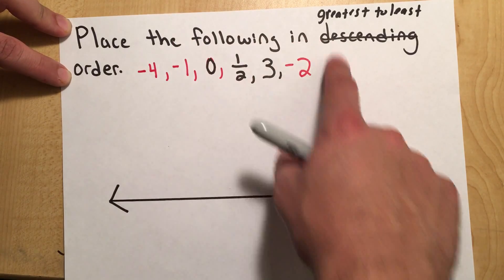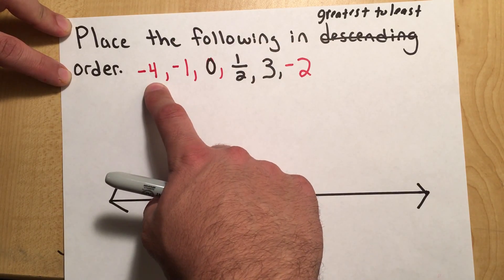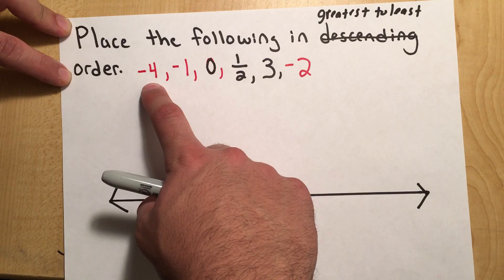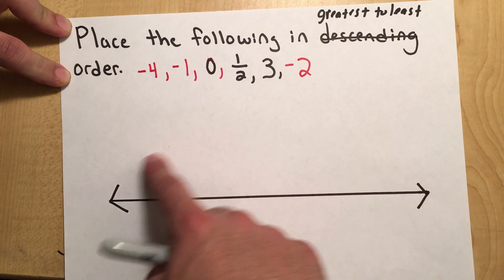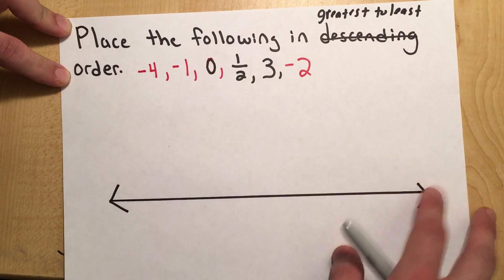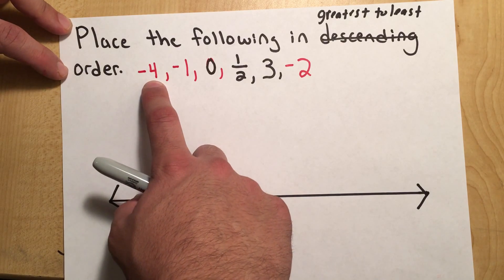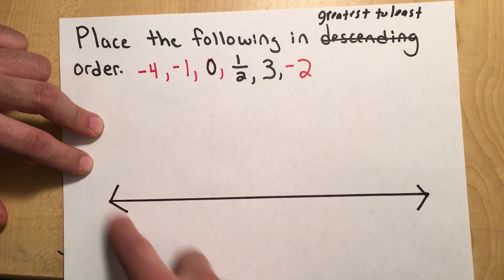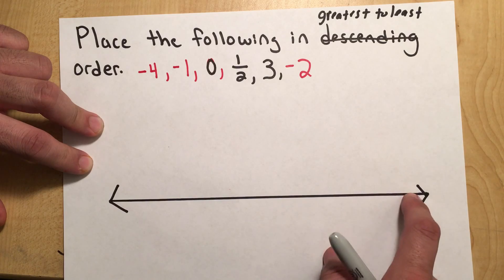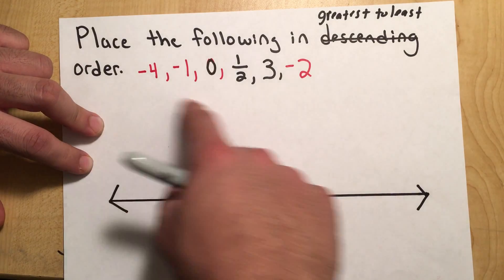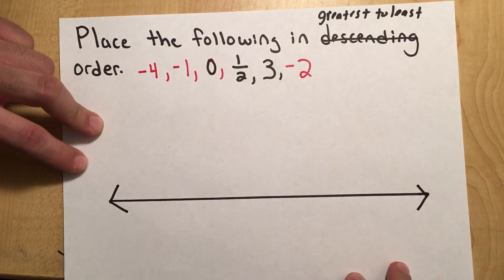So I'm just going to take our biggest number, which is 4. 4 is the biggest absolute value. And I'm going to create my number line on both ends, going up to 4 and going up to negative 4 so I can make sure that I can squeeze all these numbers in there.